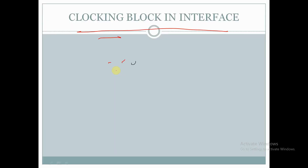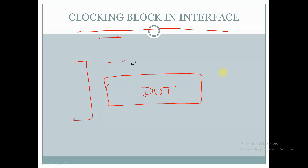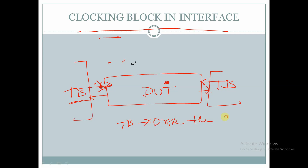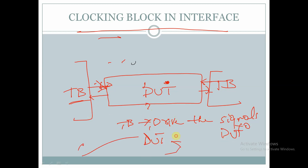Consider this as a DUT and here we have a test bench. This test bench is driving the signals to the DUT, and the signals received by the DUT will be sampled and given back to the test bench. So the TB will drive signals to the DUT and the DUT will sample the signals. This driving and sampling of signals will be happening at the edges of the clock.